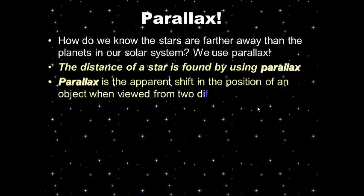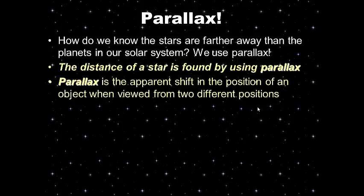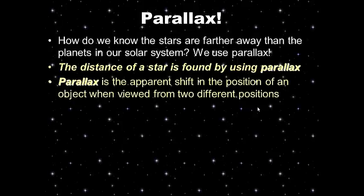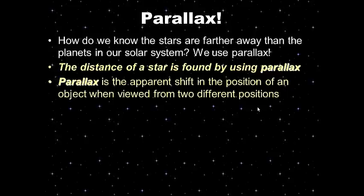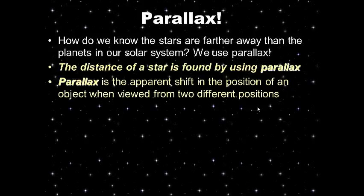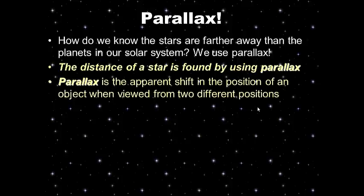Parallax is the apparent shift in the position of an object when viewed from two different positions. When you say the word 'apparent,' it doesn't mean it really happens — it just appears to happen. So think of apparent as meaning it appears to shift.